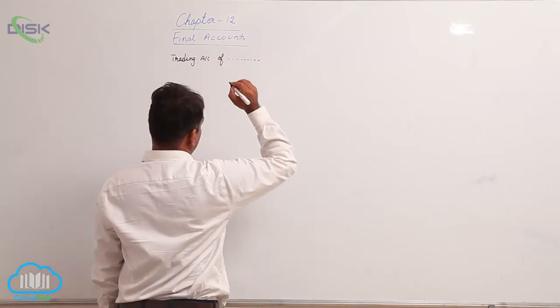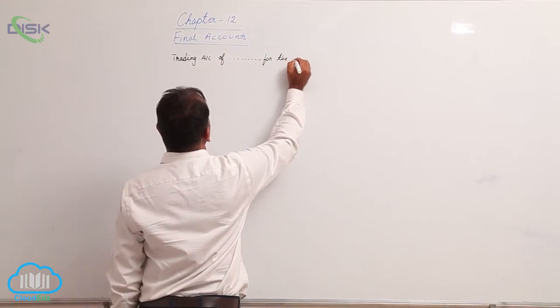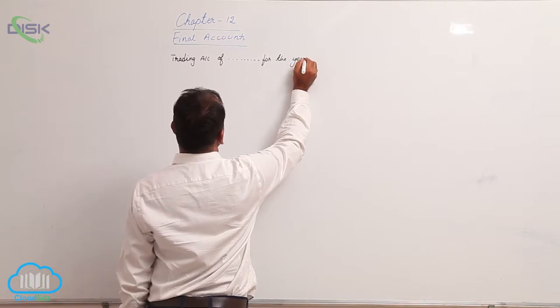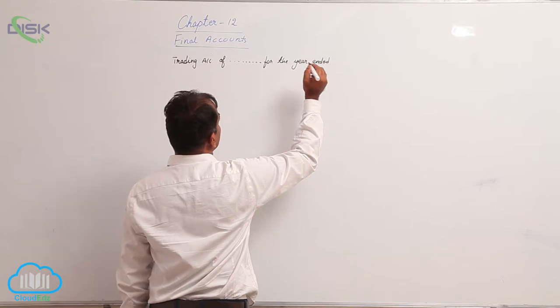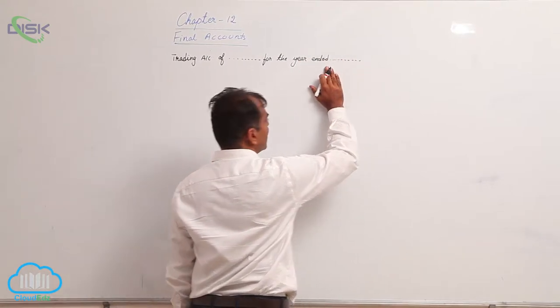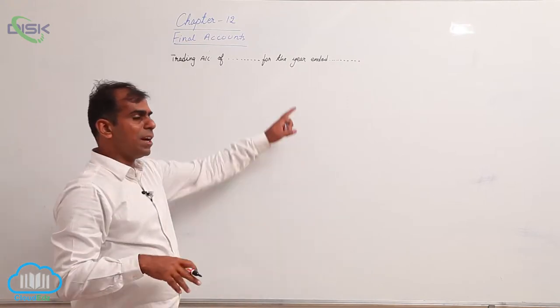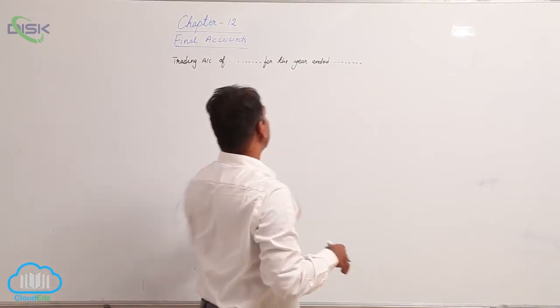For the year or period ended - because trading account is for a particular year, you have to mention the year for which, along with the last day of the year. This would be your heading.